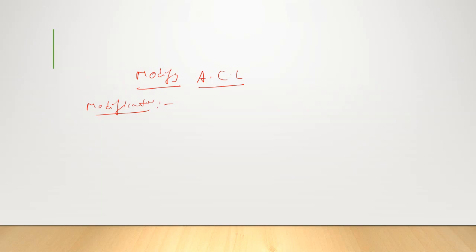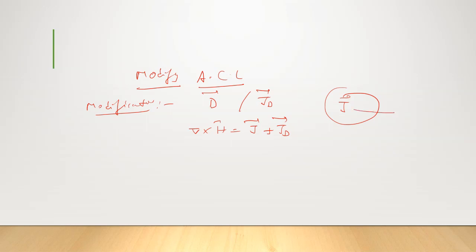Maxwell modified Ampere's law by introducing the concept of displacement current and displacement current density Jd. He concluded that equation number two, ∇×H = J, should be written as ∇×H = J + Jd. Whatever is added must have the same dimensions as J, that is, the same as conduction current density. So he added Jd — this is equation number three.